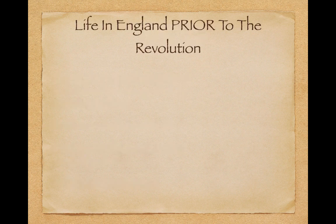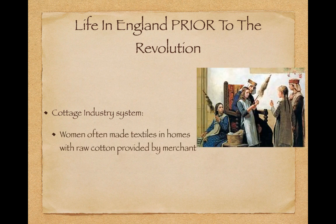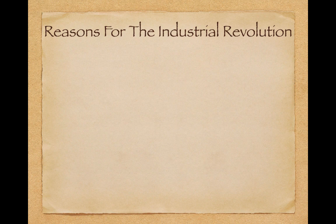Life in England prior to the Revolution featured the Cottage Industry System. This is where women often made textiles in their homes in Britain with raw cotton provided by merchants. So women, instead of working in factories, would work in their homes. And that would all change with the Industrial Revolution.